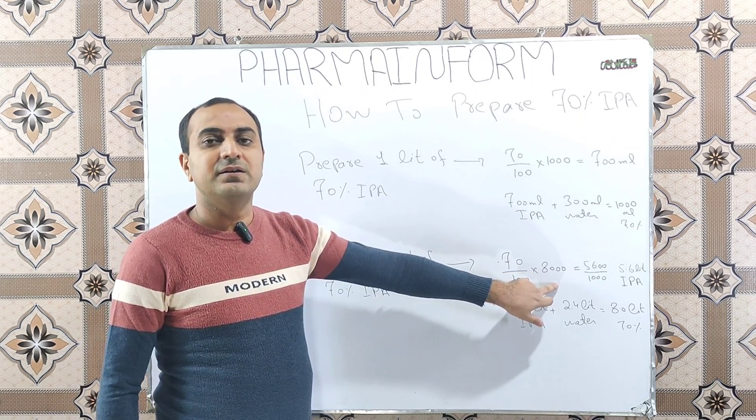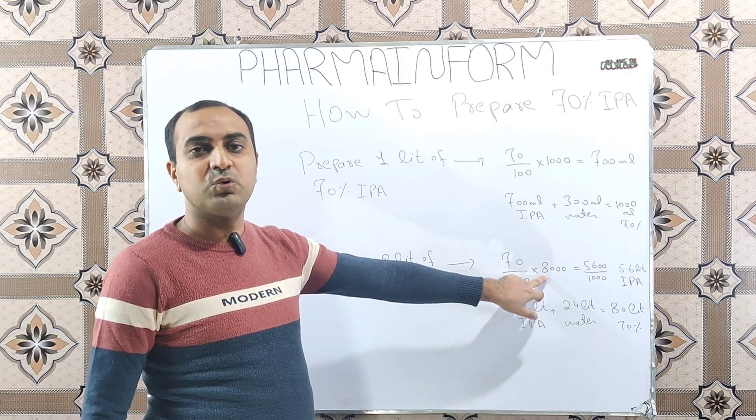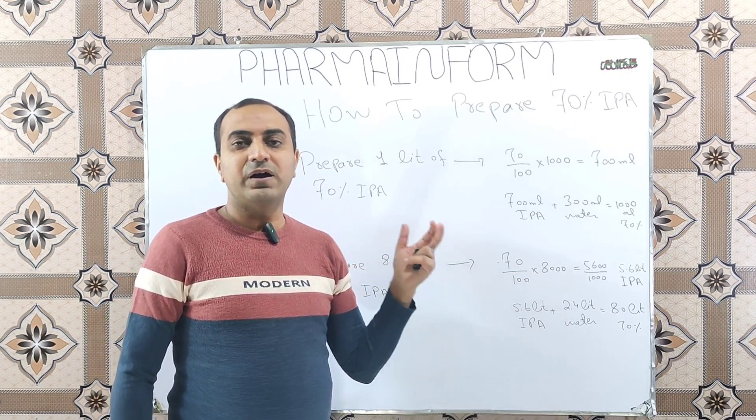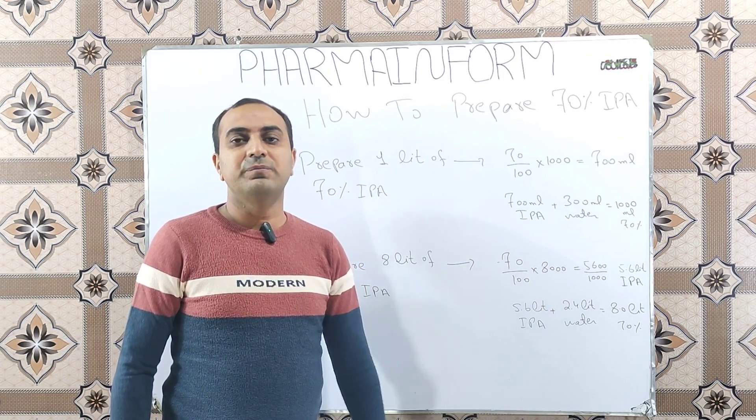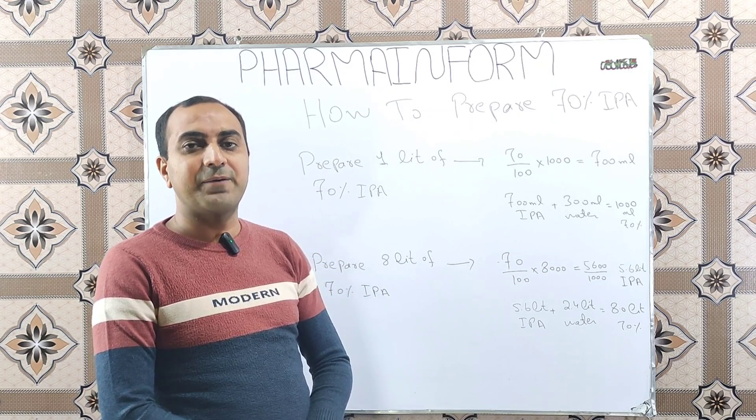Then 8 into 1000, we convert liters into ml, which is 8000 ml. If you want to prepare 10 liters, then 10 into 1000, which is 70 over 100 into 10,000 ml.